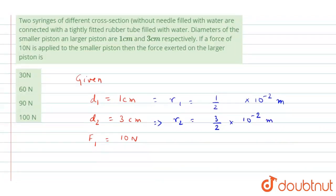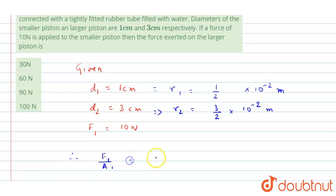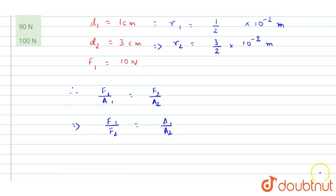Now we will calculate the force exerted on the larger piston. Since liquid pressure is uniform throughout the liquid — it has no direction — it is the same throughout. Therefore, f1 by a1 equals f2 by a2, which we can rearrange as f1 by f2 equals a1 by a2.